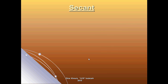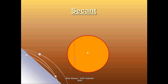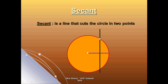Another position for a line is the secant. When you have a circle with center O and a given radius, drawing a line which intersects the circle at two points — this line is called the secant. The distance between the center of the circle and the secant, as you can see, is less than the radius. The distance is shown in yellow and the radius in blue, so the distance from the center to the secant is less than R.